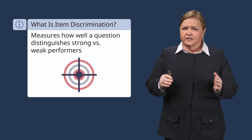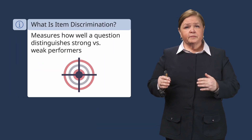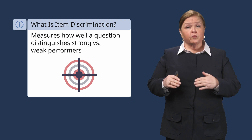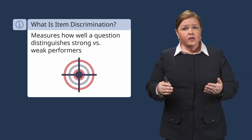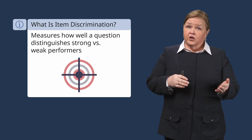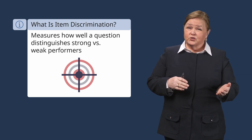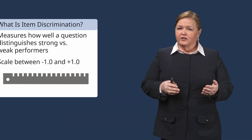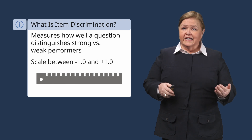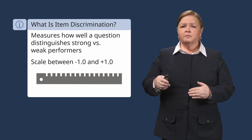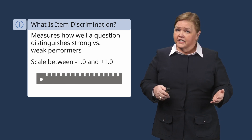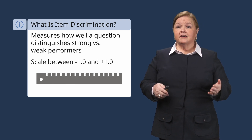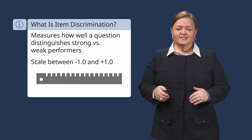So think about it this way: if it's a good test question, it should be answered correctly by students who perform well overall on the exam. This question should also be missed by students who struggle with the exam. That's all item discrimination measures. The values range from negative one to positive one, just like a correlation coefficient, because that's exactly what it is.